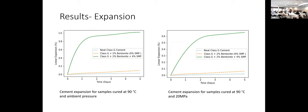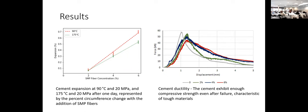We ran tests at ambient conditions and also at higher pressure and temperature. Looking at uniaxial loading results — plain cement versus cement containing shape memory polymers — adding shape memory polymers reduces compressive strength by about 10 to 15%, but makes the cement more ductile: we reach maximum strength at a larger displacement or deformation. One key benefit of this additive is that it is inert — it doesn't react with the cement matrix. The shape memory polymer can also be made in fiber form or other geometries, so it can also be used as a loss circulation material for cement.